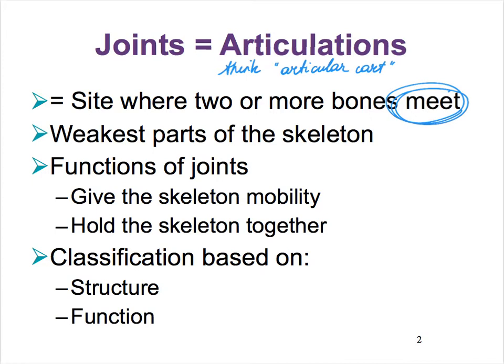Now let's take a look at how joints are classified. We can look at their anatomy, and when we do, we call that the structural classification system. If we focus more on their function, we call it the functional classification system, and this is what we're going to start out with first.